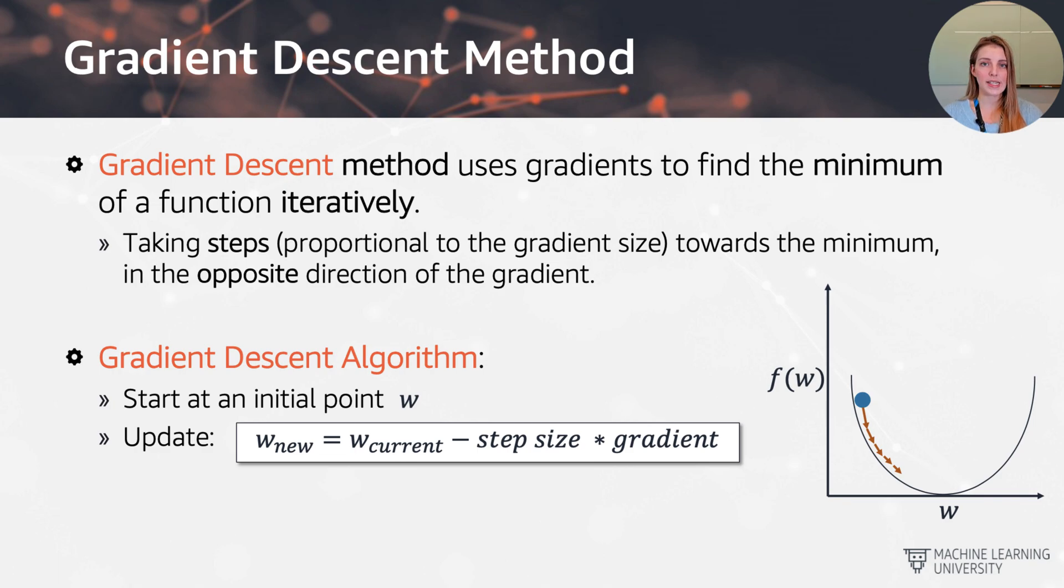The gradient descent algorithm then is starting with an initial point w. And then we want to find an update such that we start from the current w position and we take a step times the gradient. So here we also see step size or learning rate if you're coming from neural nets. So this is actually going to be a parameter, again, that we can choose and we can try many different values of that as well.